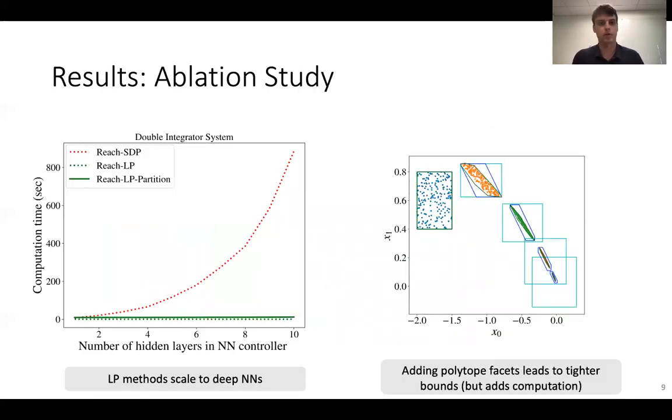We looked at another couple of ablations in the paper. Thinking about how to scale this method to deep neural networks, as the network size grows, we see much better scaling of our LP-based solutions in terms of computation time. And then looking at another one of the tuning knobs in our algorithm, how many facets you have in your polytope. As you add more and more facets, which are basically adding more edges to the polytope, you can get tighter and tighter performance. Of course, you pay for that with a little more computation time.